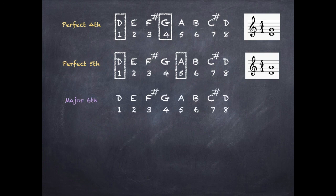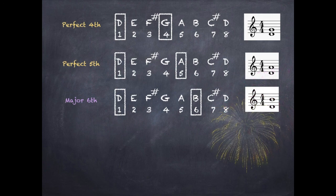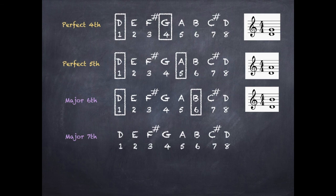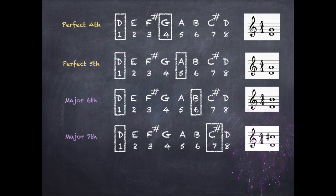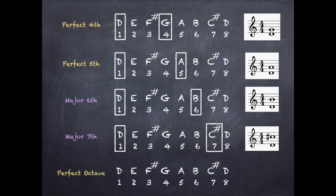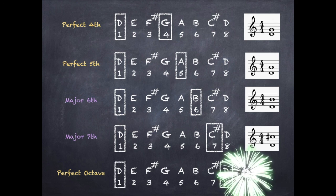A major sixth: I go from D to the sixth note, B, and stack them. A major seventh: from D to the seventh note, C sharp, and I stack them. And last but not least, a perfect octave: from D to the eighth note, also D, and I stack them on top of each other.